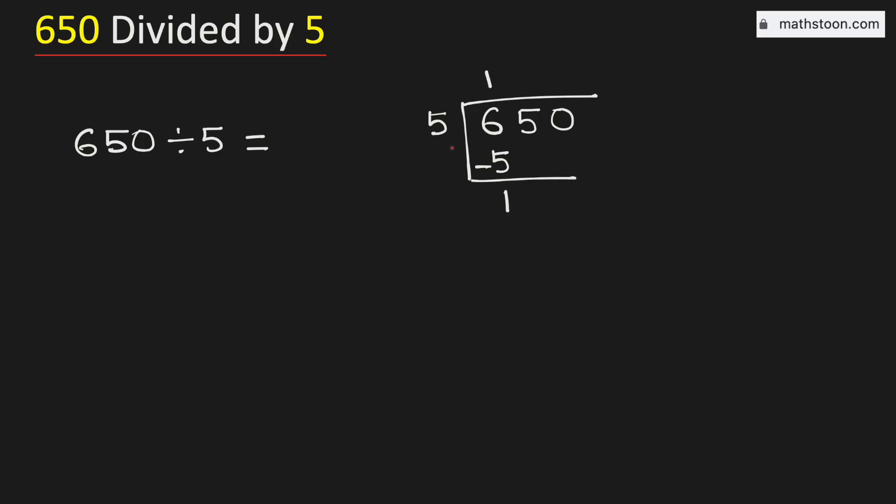Now 1 is less than 5, so we will bring down this number 5 here. And we know that 5 times 3 is 15. Subtract, we get 0.